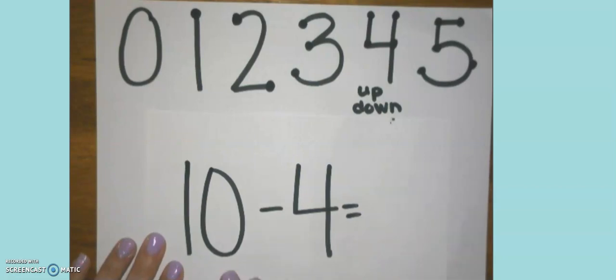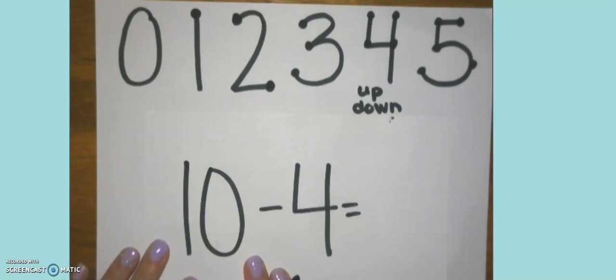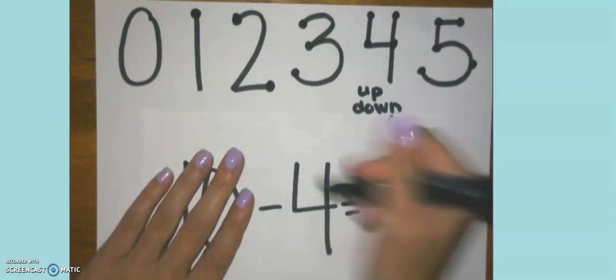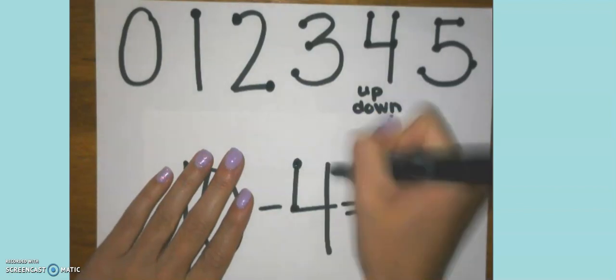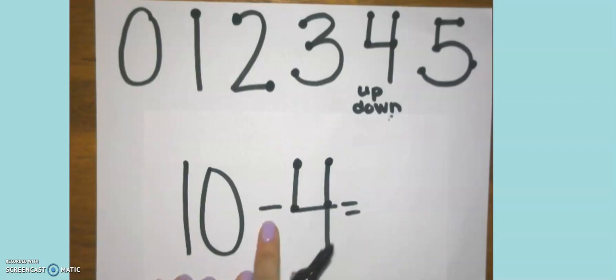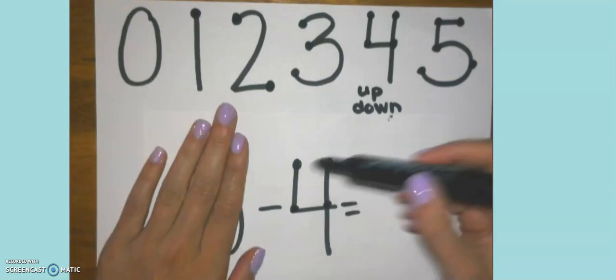We talked about how not just with addition, but we can also use touch math for subtraction. So let's look at a few examples of that. I have 10 minus four. I don't put any touch points on the larger number. I only need to put them on the smaller number. Now, in this case, since it's subtraction, I need to make sure that I'm counting down. So I go 10, 9, 8, 7, 6.